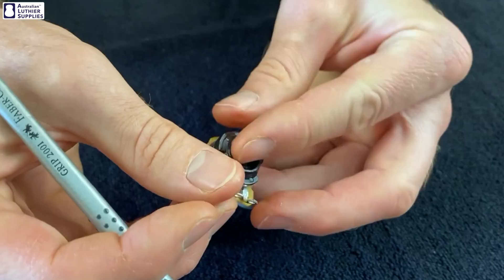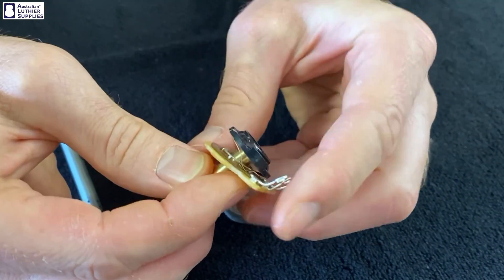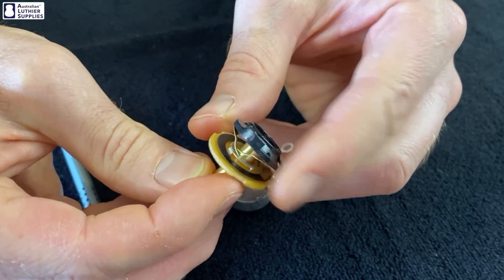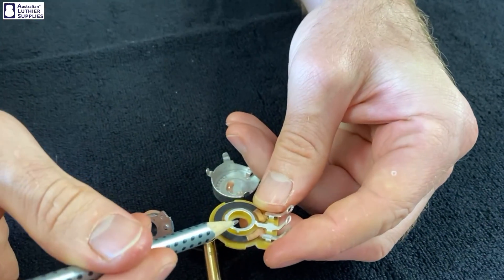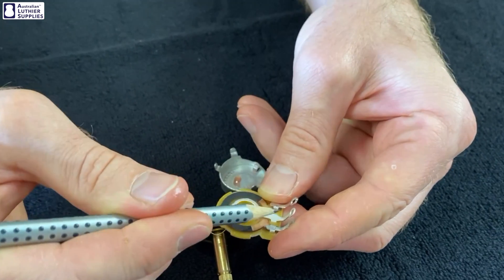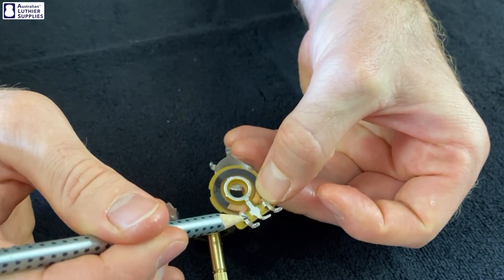The outer wiper travels around that carbon circle, so depending on the position of that wiper on that carbon, that'll dictate how much of the signal can get between the middle lug and one of the outer lugs.